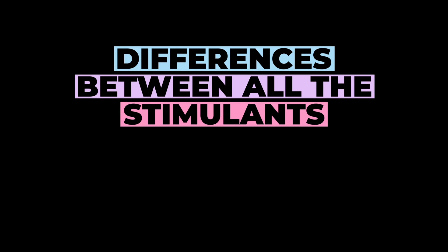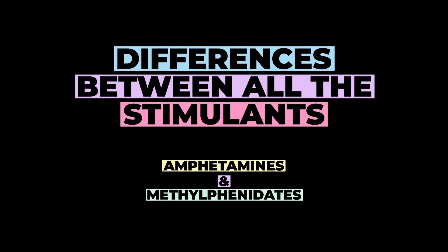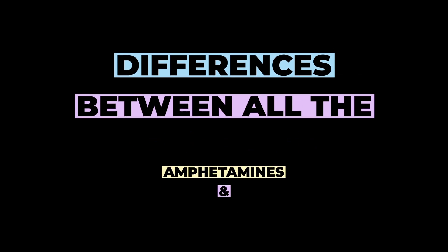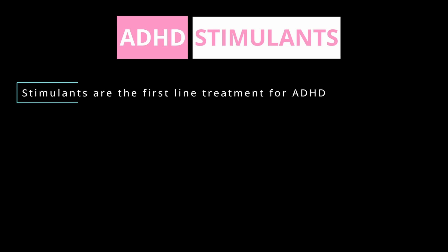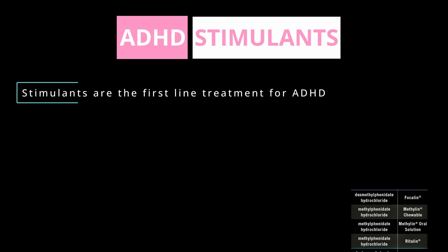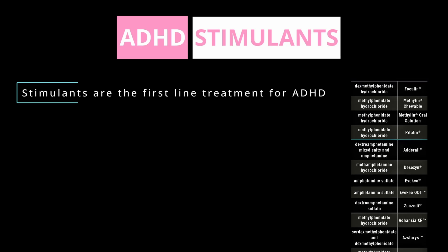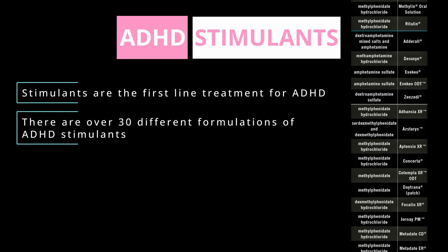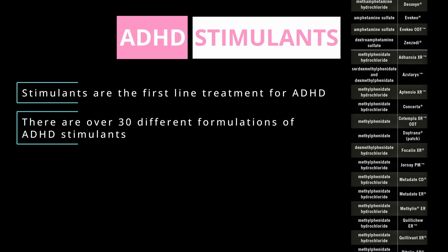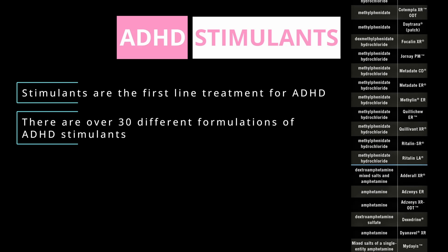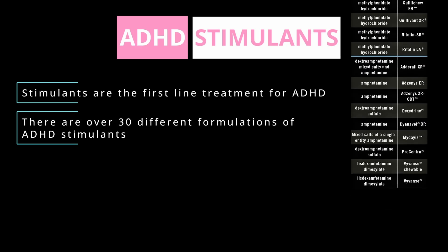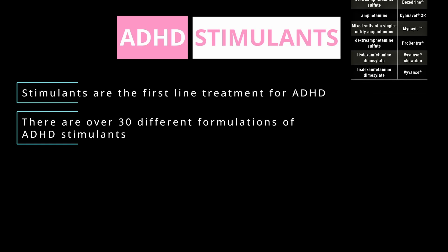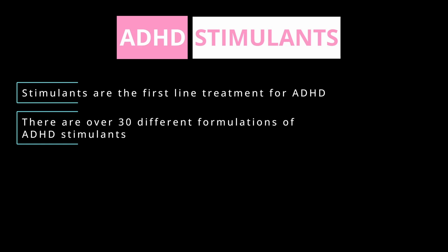We'll go through a way of making sense of all the different amphetamines and all the different methylphenidates. Stimulants are the first line treatment for ADHD, and there are over 30 different formulations available. It can seem overwhelming to learn the differences between them, but I'm going to make it super simple so that by the end of this video, you know all the differences between all the different formulations. I'm going to do that by looking at the four major ways that stimulants differ.